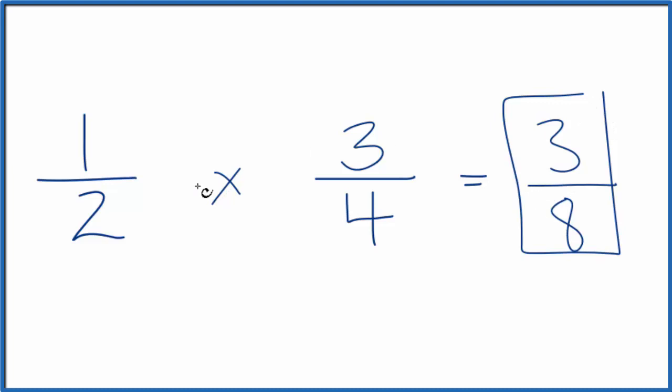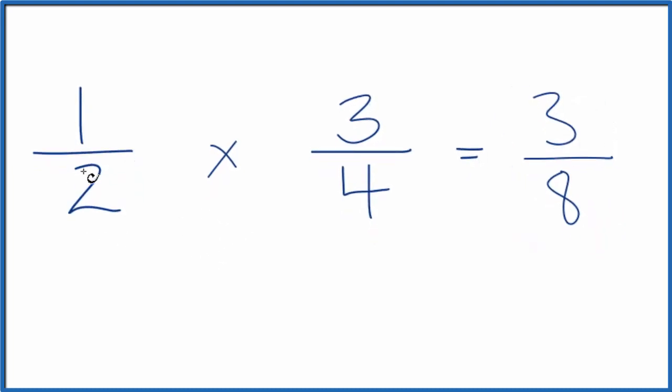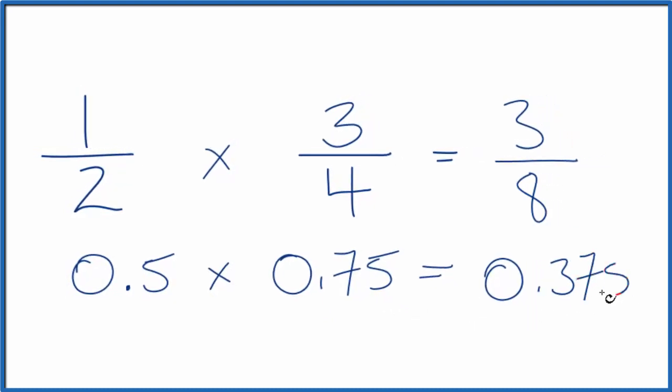Let's check this with decimals, though. I could say one divided by two, that's 0.5, times three divided by four, that's 0.75. If you multiply 0.5 times 0.75, you get 0.375.